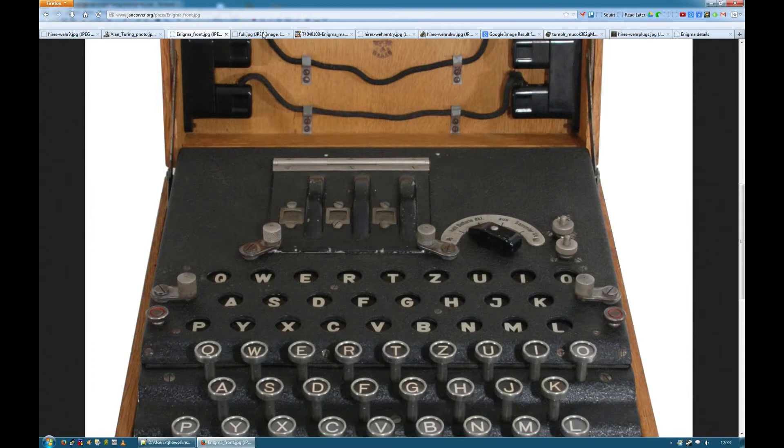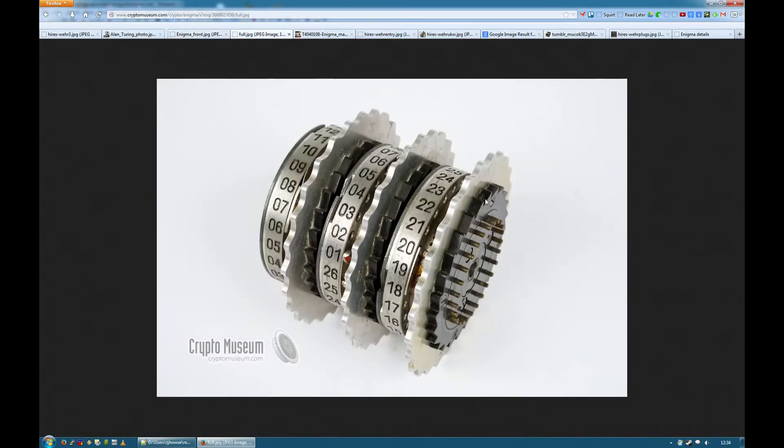The rightmost rotor turns with this ratchet once every keypress. And on the Wehrmacht Enigma, this one rotates once for every half revolution of this one. And then the one to the left of that rotates one click for every half revolution of the one to the right of it.